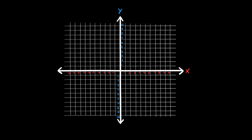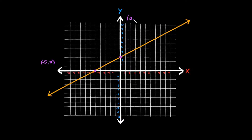So we have our coordinate plane right here. Let's just say we're plotting a line. The x-intercept is where this line right here crosses the x-axis. So your x-intercept would be right there, and your y-intercept is where this line crosses your y-axis, which would be right there. Let's write out the points for these really quick. Your x-intercept is at the point negative five comma zero, and your y-intercept is at the point zero comma three.